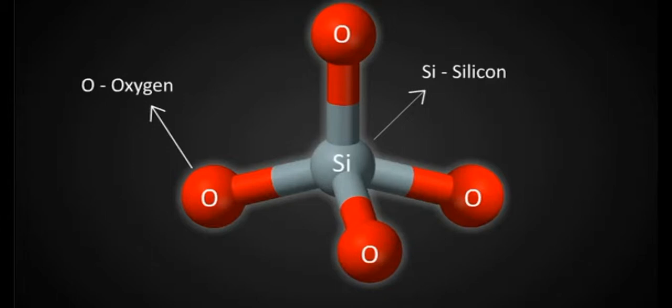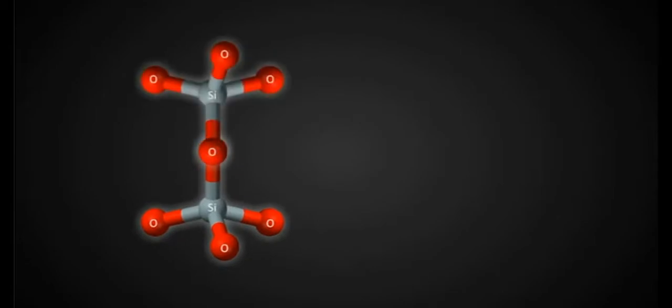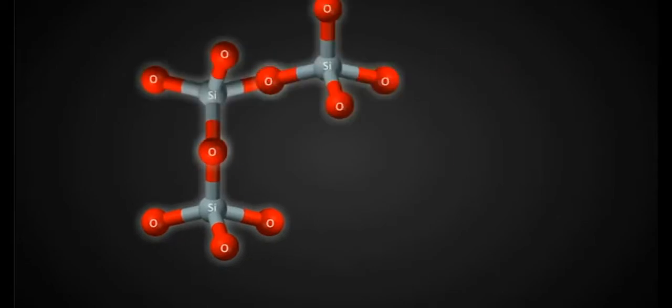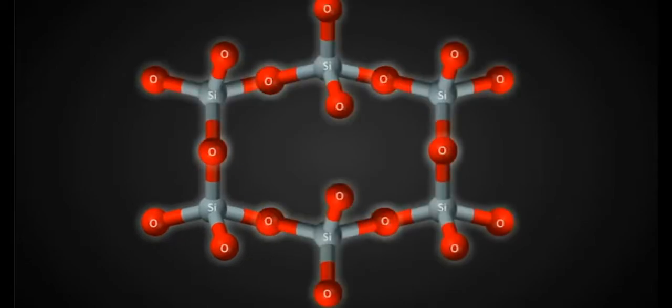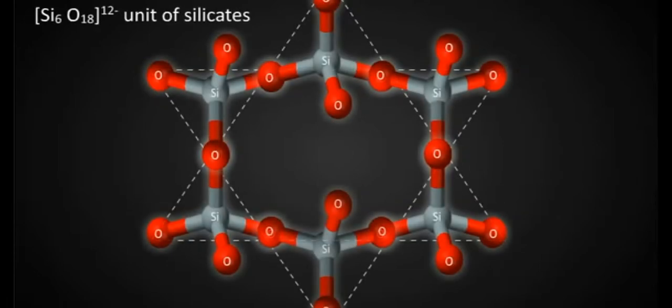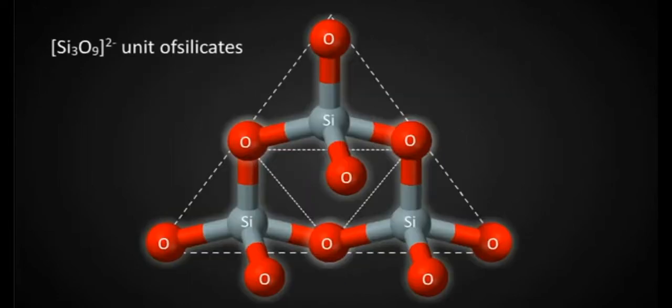When two oxygens of each silicate tetrahedron are shared with others, cyclic or ring structures are obtained, as shown in the animation. The primary unit in these silicates is the SiO3²⁻ unit.